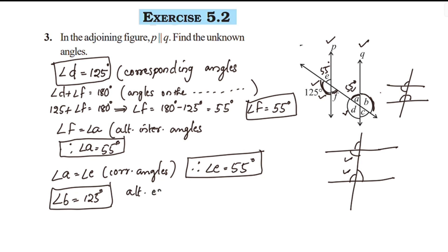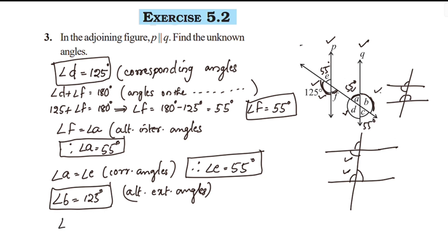Angle E and angle C are alternate exterior angles. What is angle C? Angle C is equal to 55 degrees.